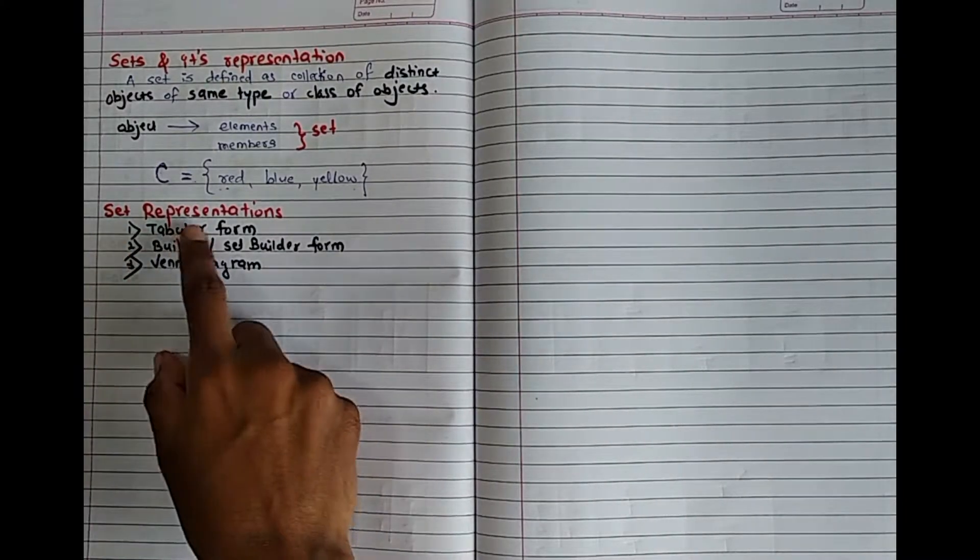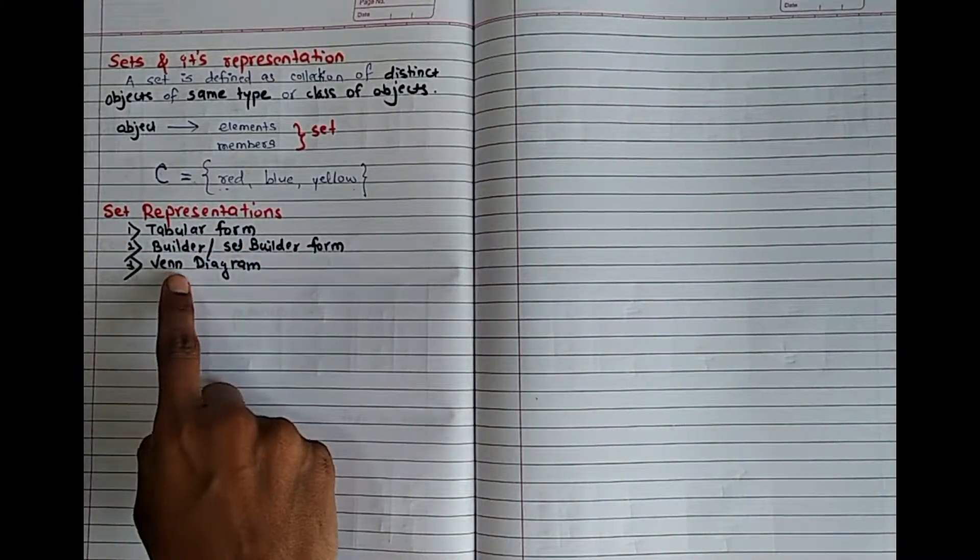You can represent your set by using these three representations: tabular form, builder and set builder form, and third is the Venn diagram.